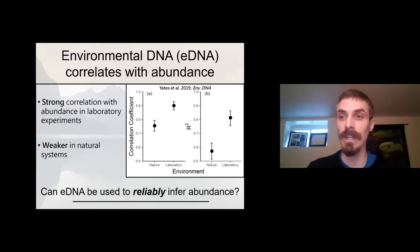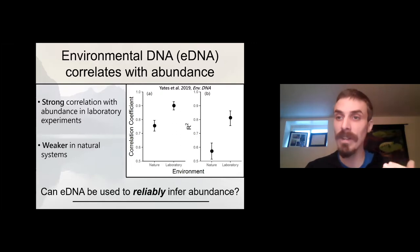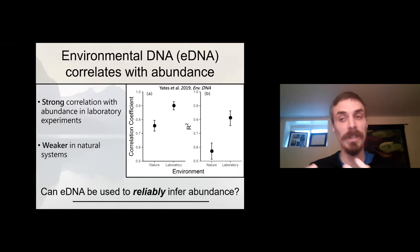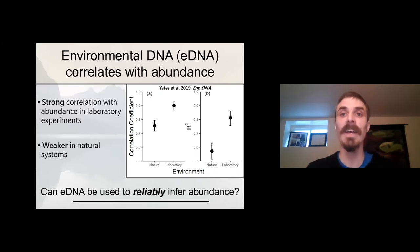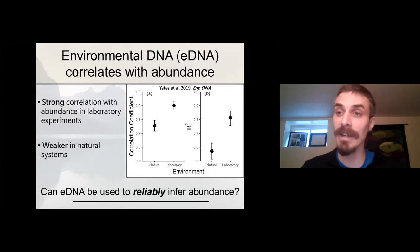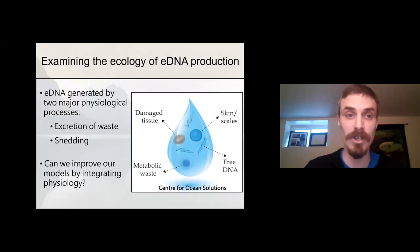It was still positive but a lot weaker relative to laboratory environments, with abundance explaining about 50% to 60% of the variation in eDNA concentration observed across environments. Despite the fact that this was a consistent positive relationship, it led a lot of people to question whether or not eDNA can be used to reliably infer abundance in natural ecosystems. I think we really need to start bridging that gap by thinking about eDNA dynamics and the ecology of its production.